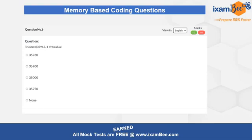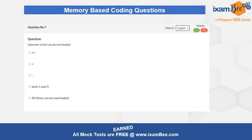Question number six asks you to calculate the result of: TRUNCATE(35965, -1) from DUAL. DUAL is a kind of table created without any explicit name. What does TRUNCATE do with this kind of command involving DUAL? There will be some kind of rounding operation performed, so according to that you have to attempt and mark your answer.